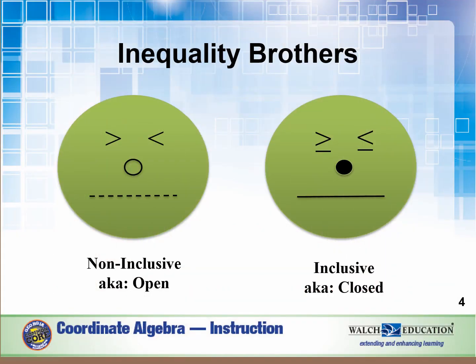So meet the inequality brothers. If we have greater than or less than, we use an open dot and a broken line — it is non-inclusive, also known as open. For greater than or equal to or less than or equal to, we use a closed dot and a straight line — it is inclusive, also known as closed.